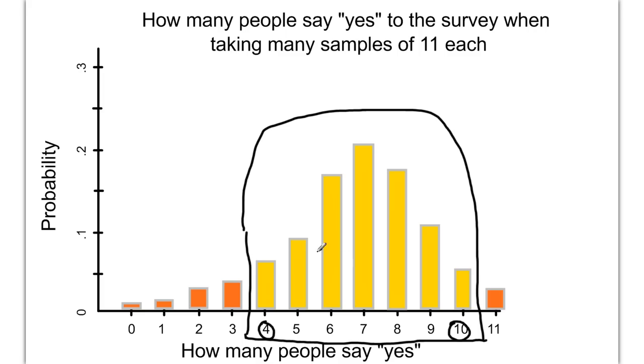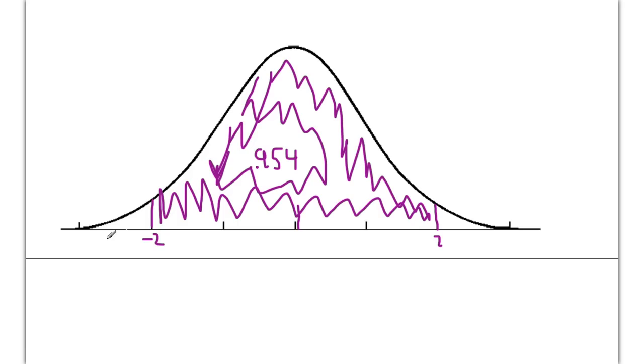It's the same idea as what we did here with the binomial distribution, where we took the middle, let's say, roughly 90% of our data, and we could then construct a range, 4 to 10. And here we constructed a range, negative two to two standard deviations.